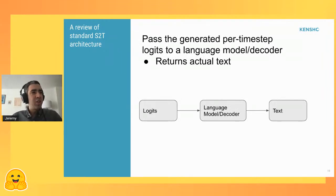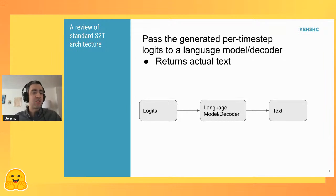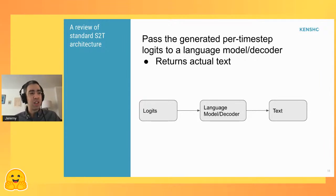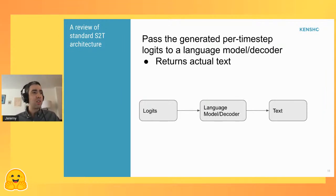Once you have this logit matrix, you pass it into some sort of decoder or language model that takes this matrix and returns actual text, which is hopefully human-readable and sensible. This is what we're going to be talking about today — the process of taking this softmax logit output and producing human-readable text.